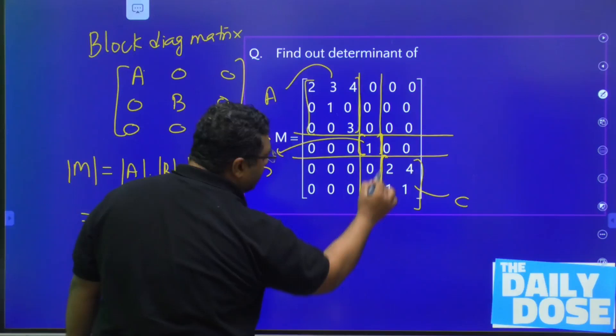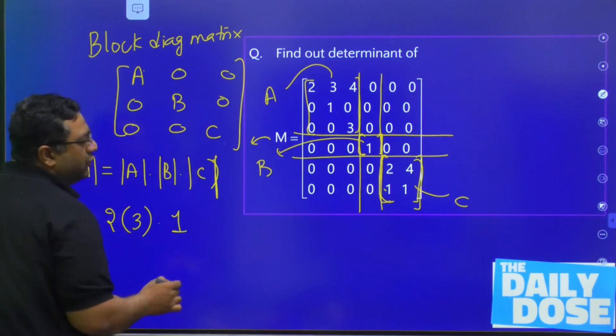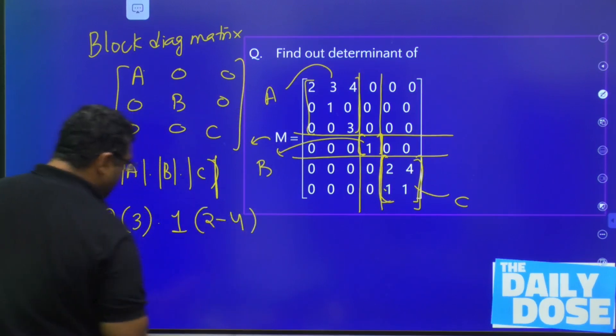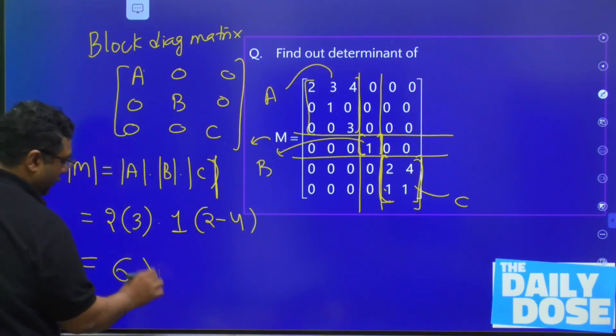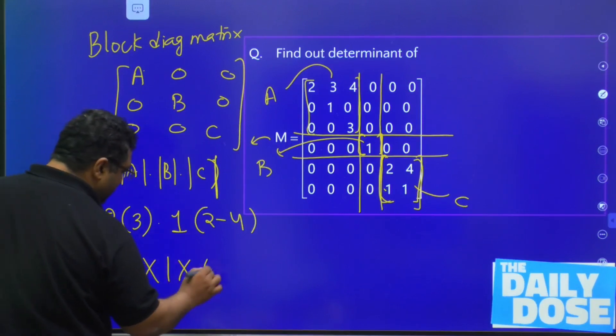Then if you are going to see this matrix, for this 2 minus 4—what is 2 minus 4?—minus 2. So the answer is 6 into 1 into minus 2. It is going to be minus 12.